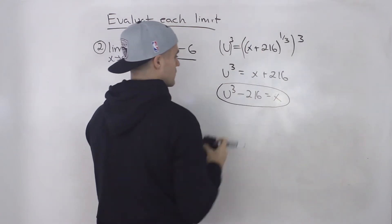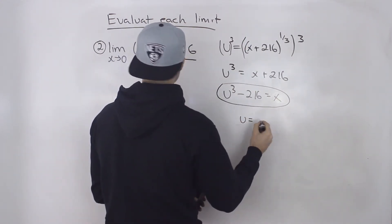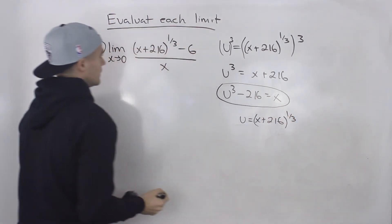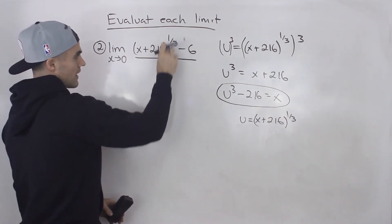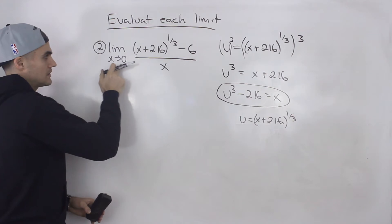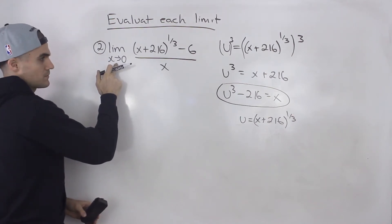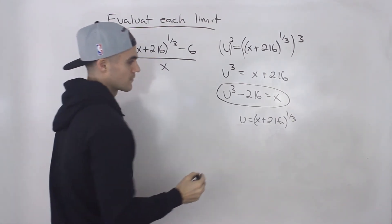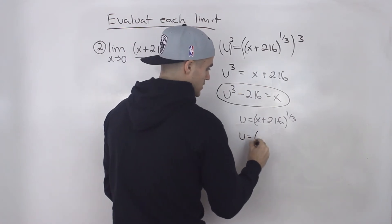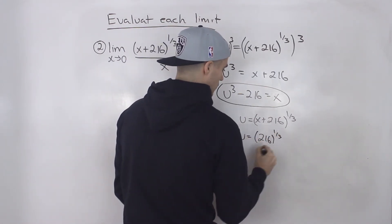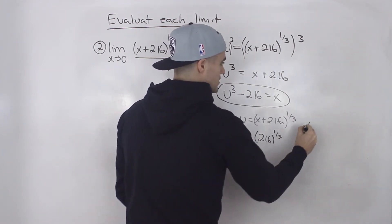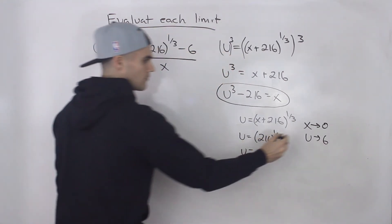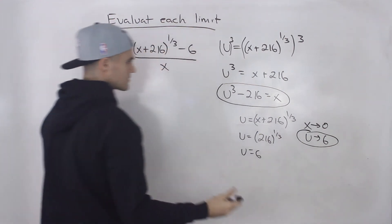So now we have something to sub in for the x, and we also have something to sub in for that expression, which we made u. So we got u equals x plus 216 to the power of one over three. So we got a substitution here, so the x's are gone in the expression. However, notice that there's still an x here as x approaches zero, and we need everything to be changed. However, when x approaches zero, notice that if we plug in zero for x here, we'll have 216 to the power of one over three, which gives us six. So x approaching zero is the same as u approaching six.